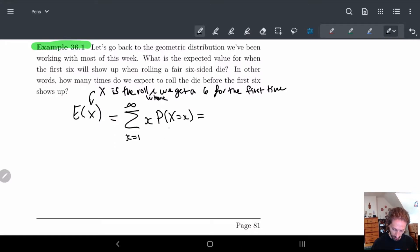Okay so what is this equal to? Well this formula we already know, this is just Q to the X minus 1 times P. So let's plug this in, so we get sum from X equals 1 to infinity of X times Q to the X minus 1 times P, and I can bring this P in front if I want.